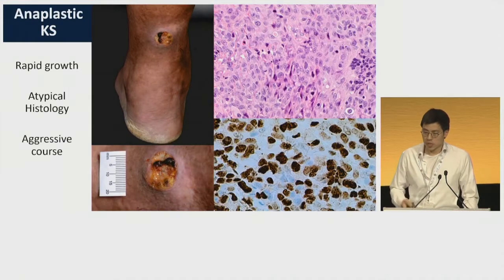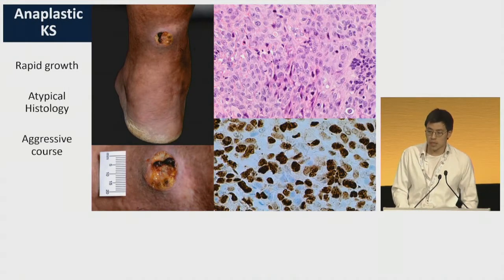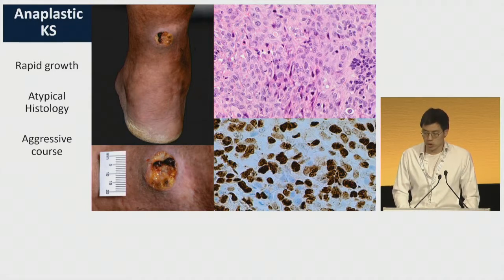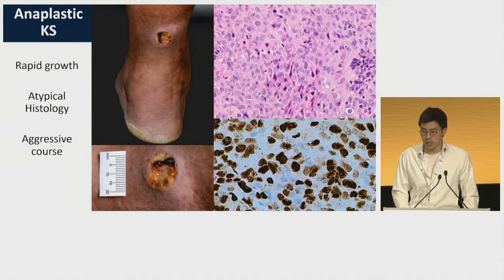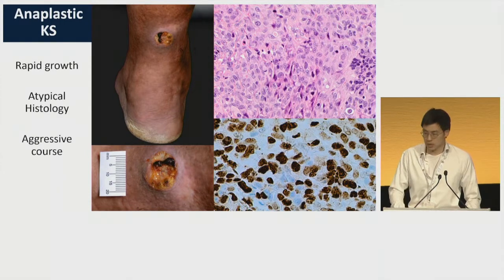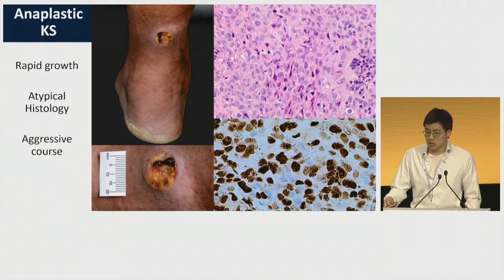In summary, we have presented a case of anaplastic Kaposi sarcoma presenting as a rapidly growing nodule, very painful and ulcerated, with atypical histology that has an aggressive course. This is something to think about in patients with long-standing KS.